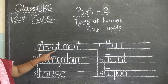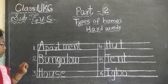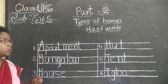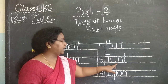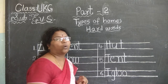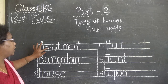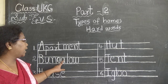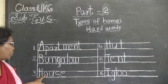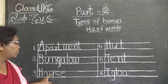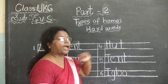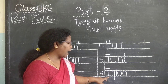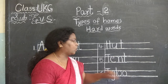One second, you will write children. A-P-A-R-T, apart. M-E-N-T, apartment. B-U-N-G-A-L-O-W, bungalow. H-O-U-S-E, house. H-U-T, hut. T-E-N-T, tent. I-G-L-O-O, igloo. Now everyone will write children. A-P-A-R-T, apart. M-E-N-T, apartment. B-U-N-G-A-L-O-W, bungalow. H-O-U-S-E, house. H-U-T, hut. T-E-N-T, tent. I-G-L-O-O, igloo.